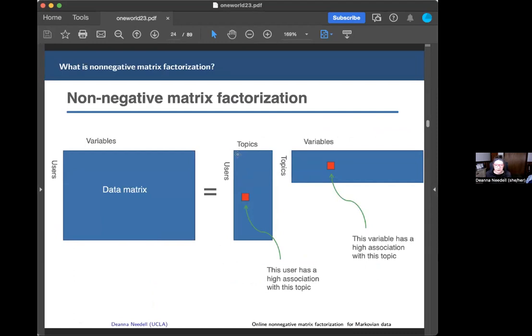If I look in this first users by topics matrix, I look for a large value here. I say, okay, this user in this row has a large association with whatever this topic in this column is. What is this topic? What does it actually mean? We go look in the other factor and look for large values in that corresponding topic. This large variable would have a large association with whatever this topic is. You kind of go back and forth between these two and that builds some intuition.